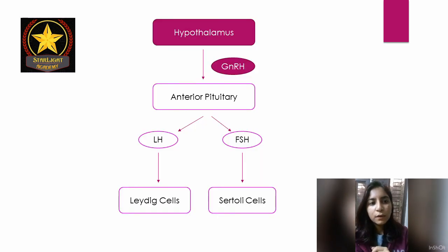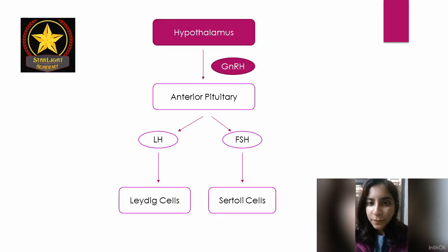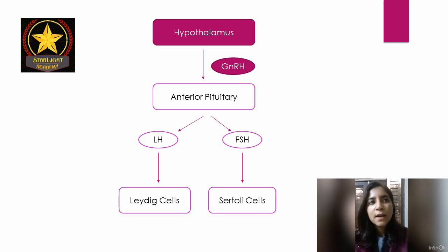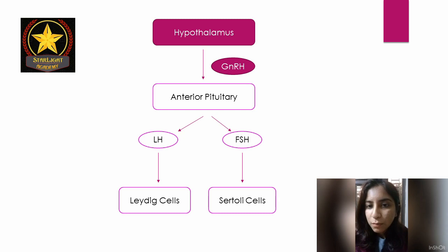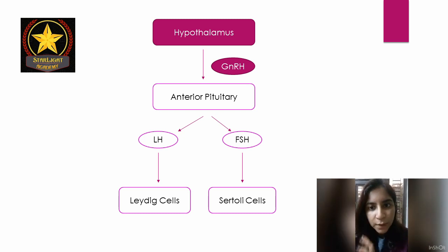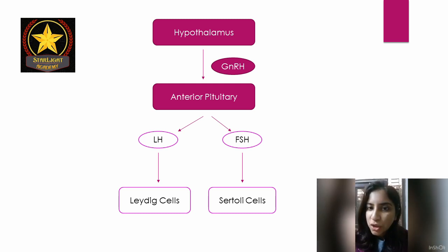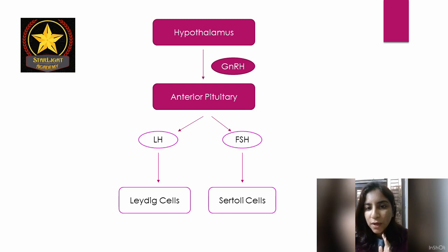As a human male reaches puberty, an endocrine gland named hypothalamus, which is present in the brain, secretes a hormone named gonadotrophin releasing hormone — GnRH for short. This GnRH from the hypothalamus goes and binds to the anterior pituitary, which is another endocrine gland also present in the brain.